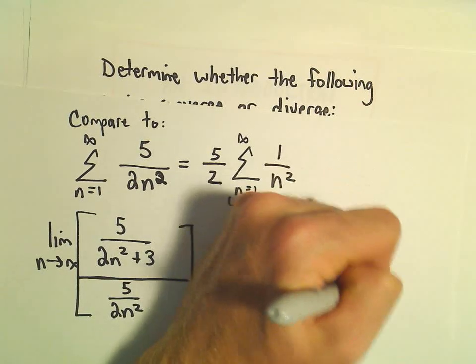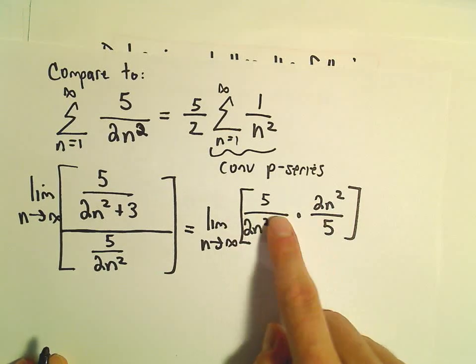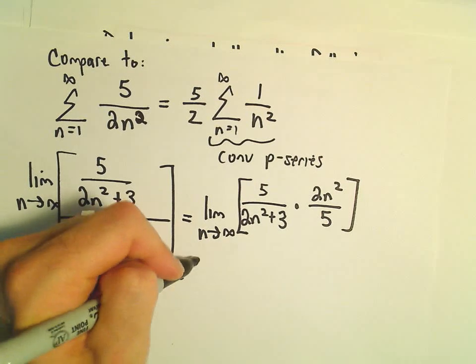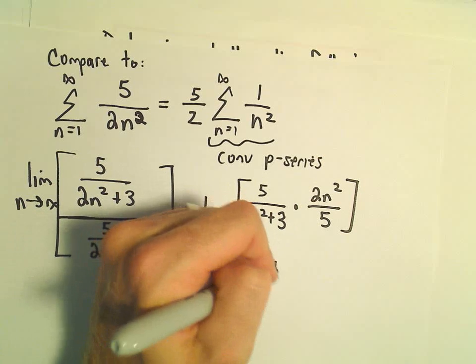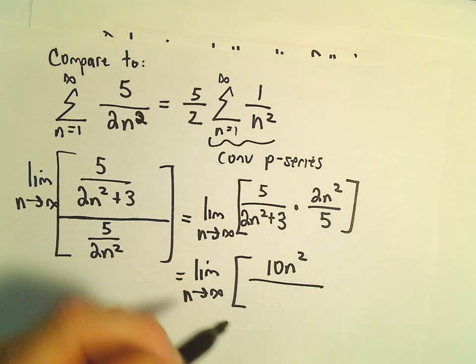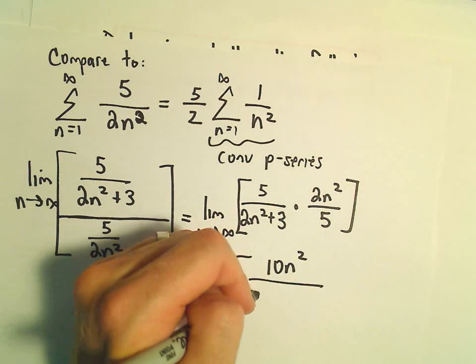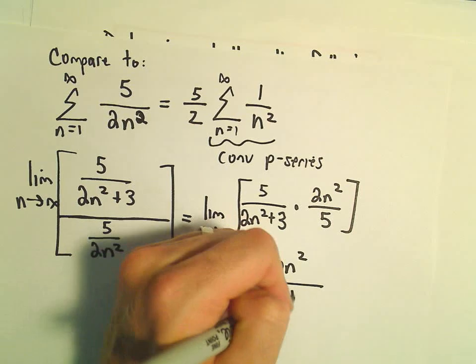But what we're doing here is forcing the degree of the numerator to equal the degree of the denominator. So let's write this one all the way out. We've got 10n². Usually at this point I just stop. We would have 10n² plus 15.